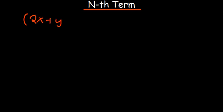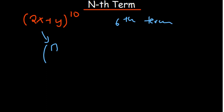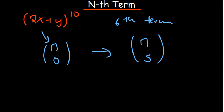Previously we talked about dealing with binomial expansions using the binomial theorem. Now, how can you directly find the nth term? For example, if you have (2x + y) raised to the power 10 and you're asked to find the sixth term, how do you do it without expanding everything from n=0 up to n=5? We say n=5 because the first term begins with zero.